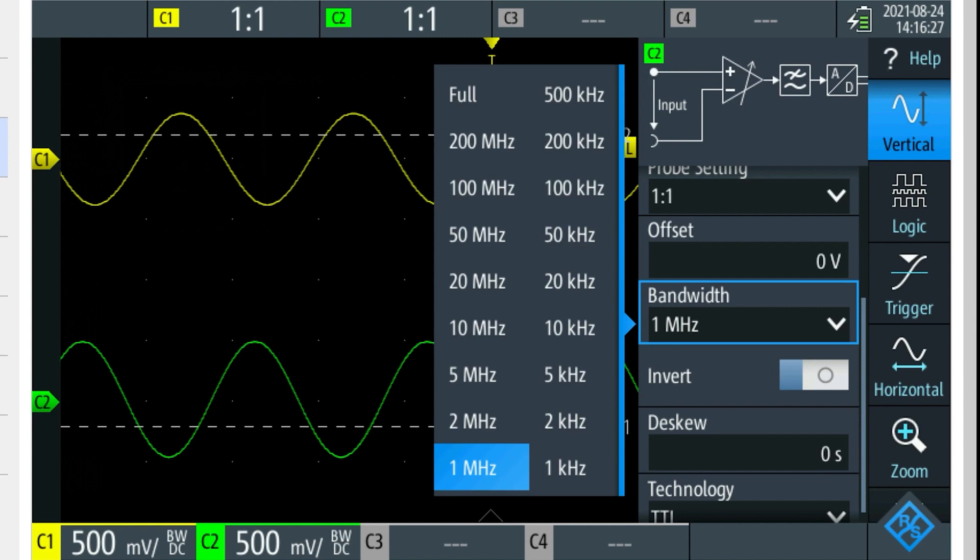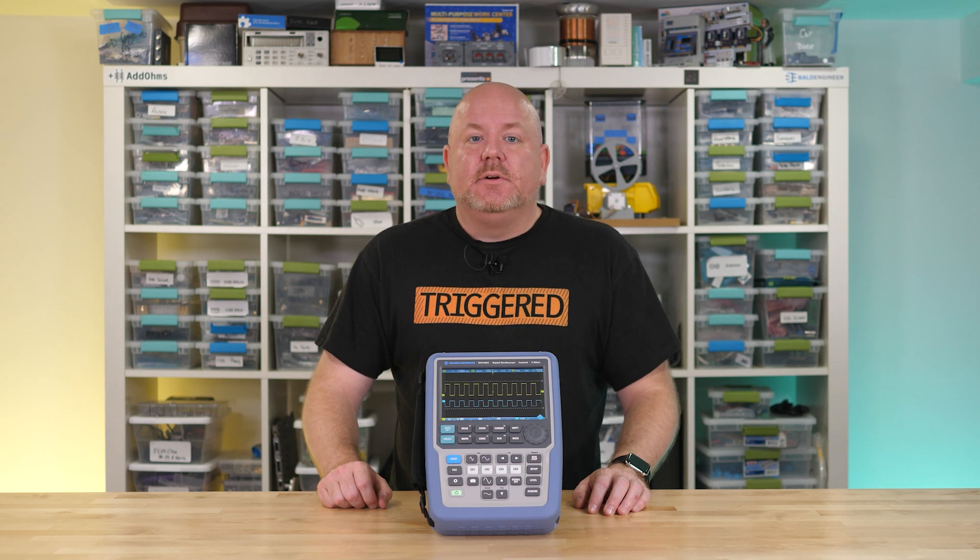It is a full-featured bench scope in a compact package. But the main reason I want to use it is because it has these built-in filters, which allows us to simulate a bunch of different bandwidths without having to have a whole bunch of scopes in the lab. If you're interested in the RTH1000, there is a link to the Element 14 community with more information.